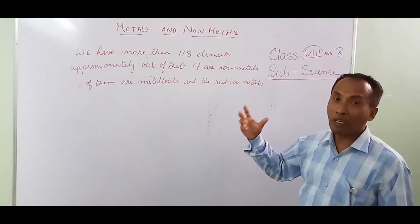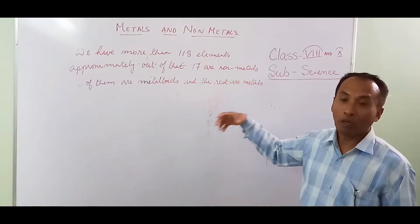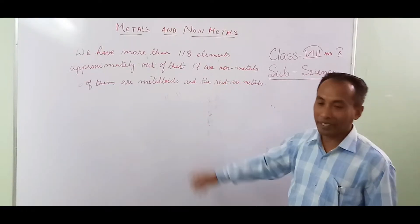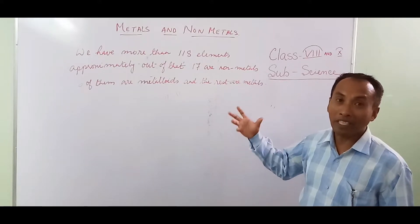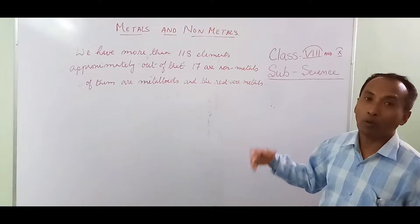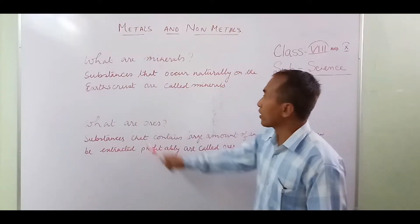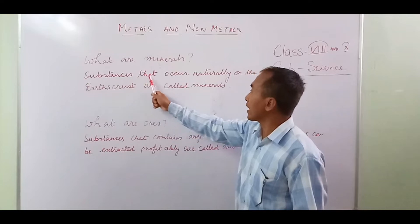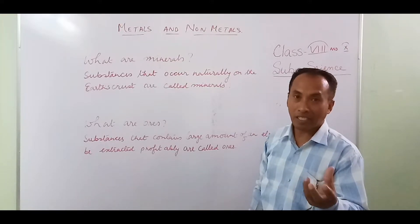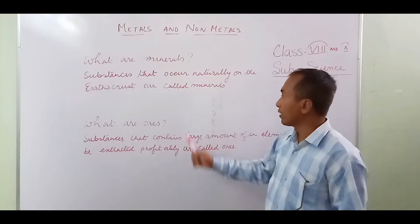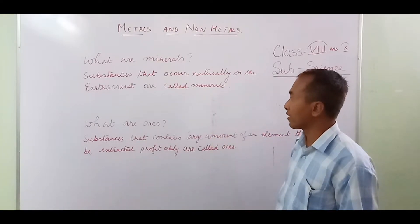To define a metal and a non-metal, we have to study the properties of metals. But first, we are going to study minerals and ores. Substances that occur naturally on the earth's crust are called minerals — maybe rocks containing some elements in small amounts. That is a mineral.